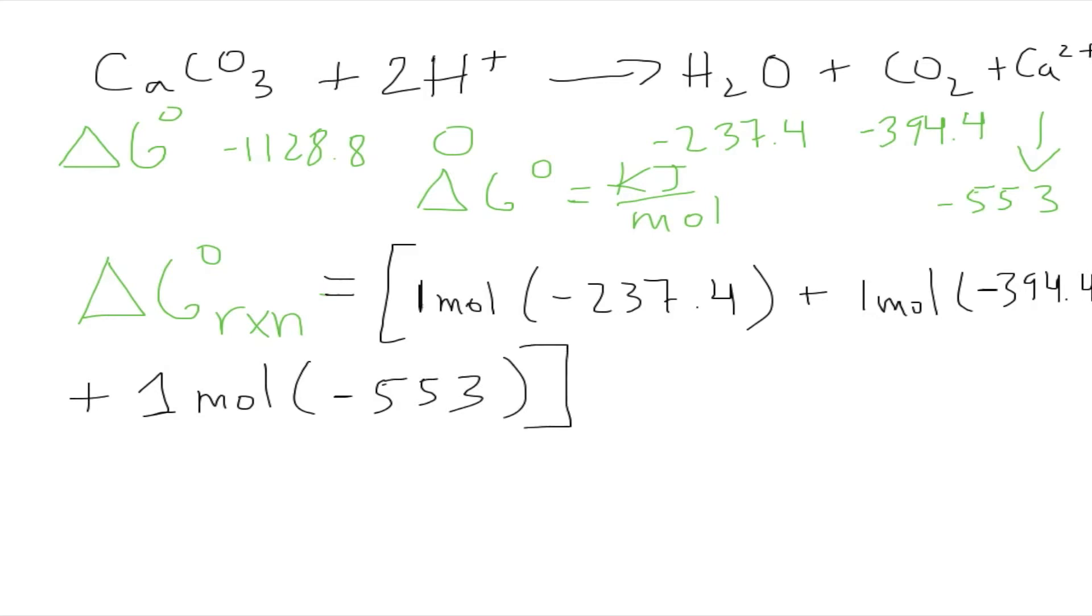We close brackets, minus open brackets for the reactants. We start with CaCO3—it only has one mole, so that'll be times negative 1128.8.